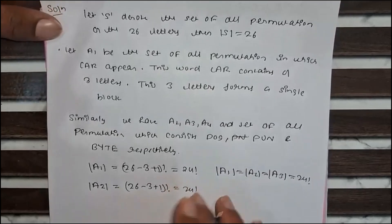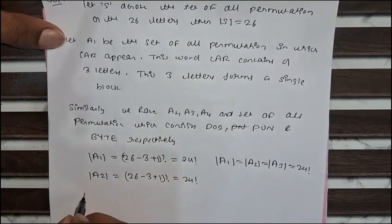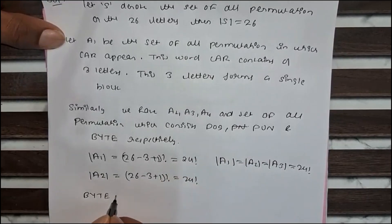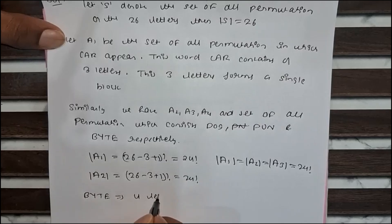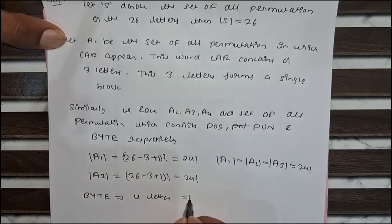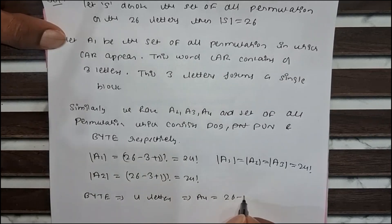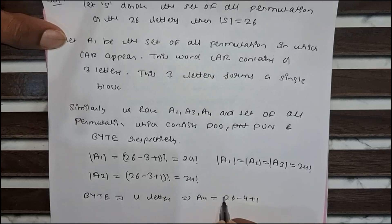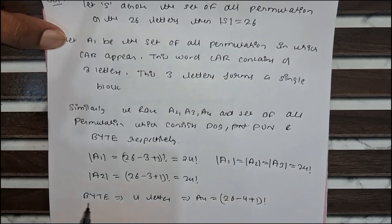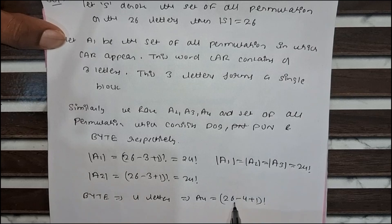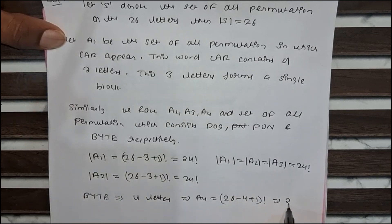Now for the fourth case: 'bite'. It contains four letters, so we can consider 'bite' as one block. A4 equals 26 minus 4 plus 1 factorial, equals 23 factorial.